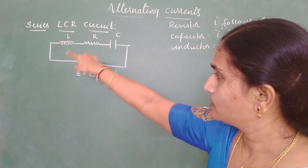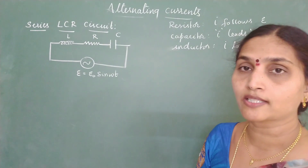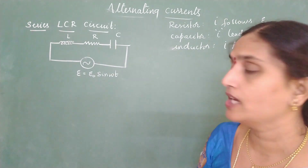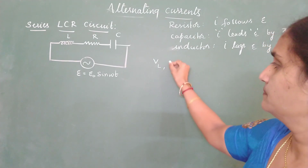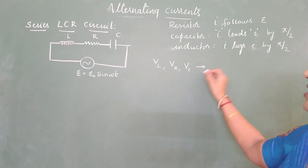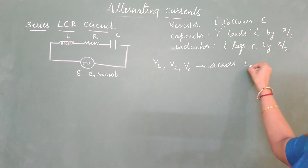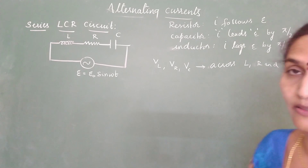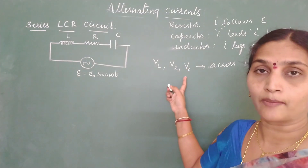Since all the three elements are connected in series, the current will remain the same for all three elements. But the potential drop across these three devices will differ — I will write them as V_L, V_R, and V_C, representing the potential drop across the inductor, resistor, and capacitor respectively.